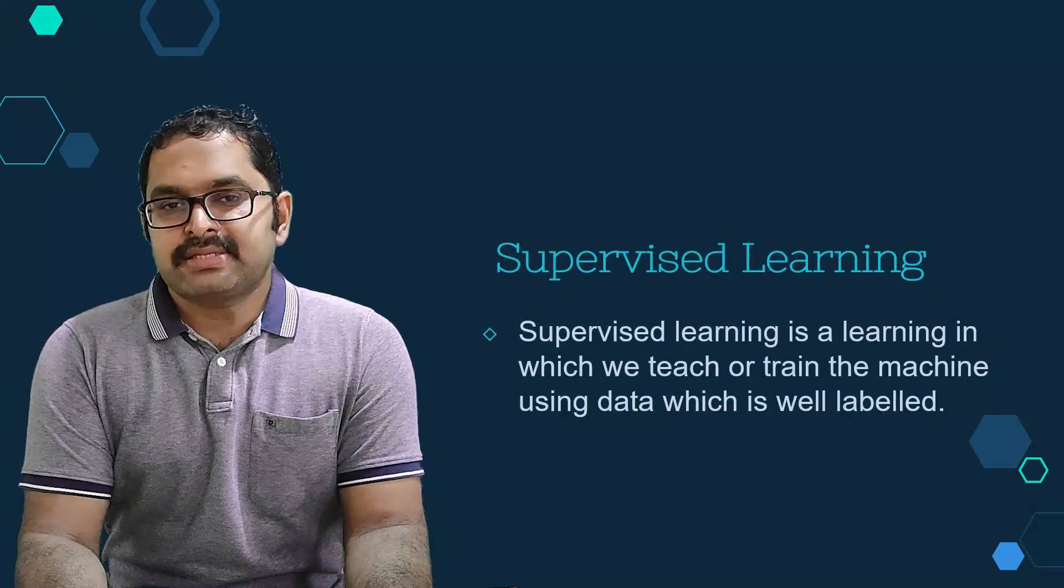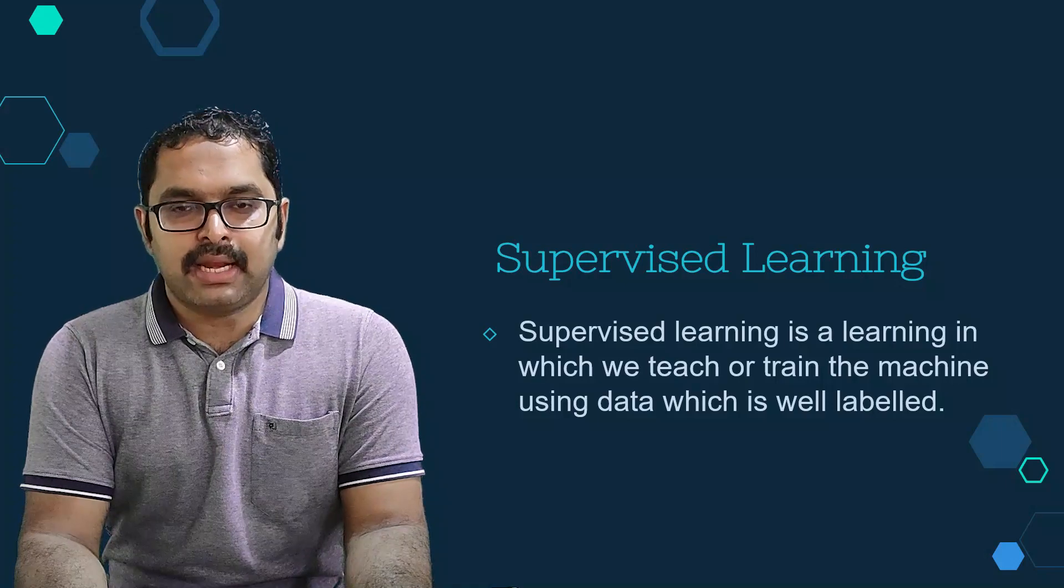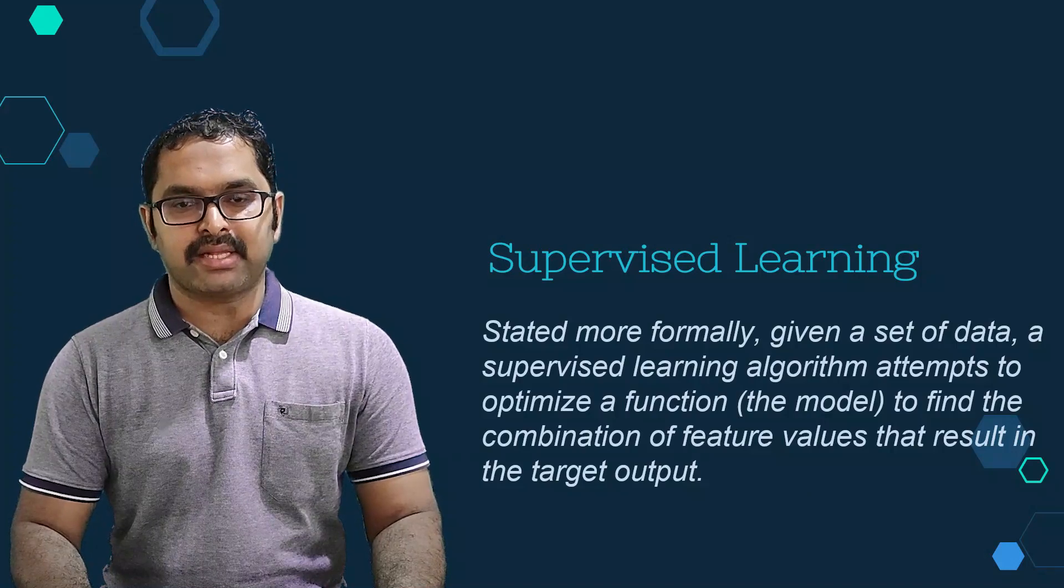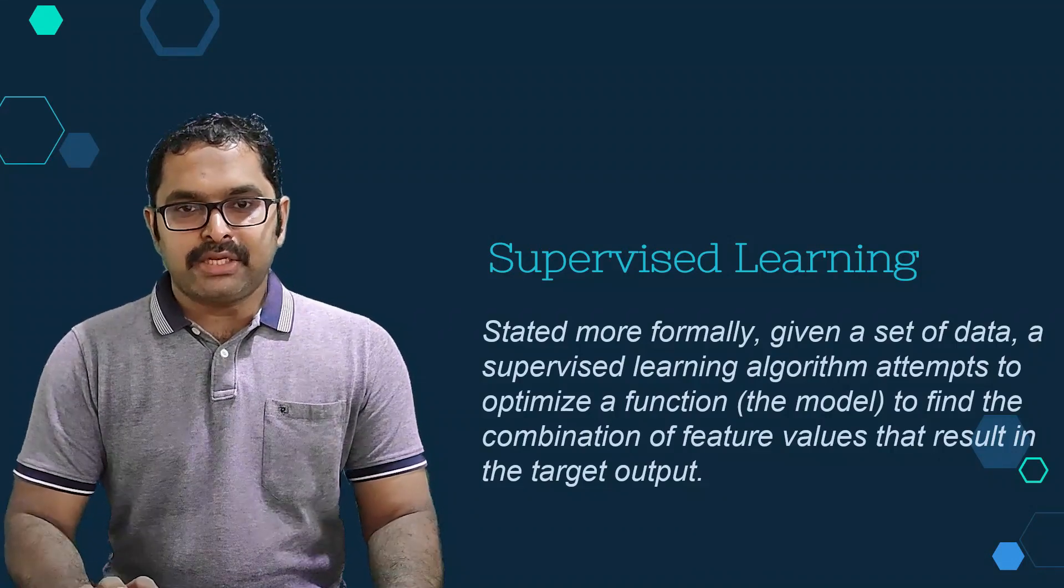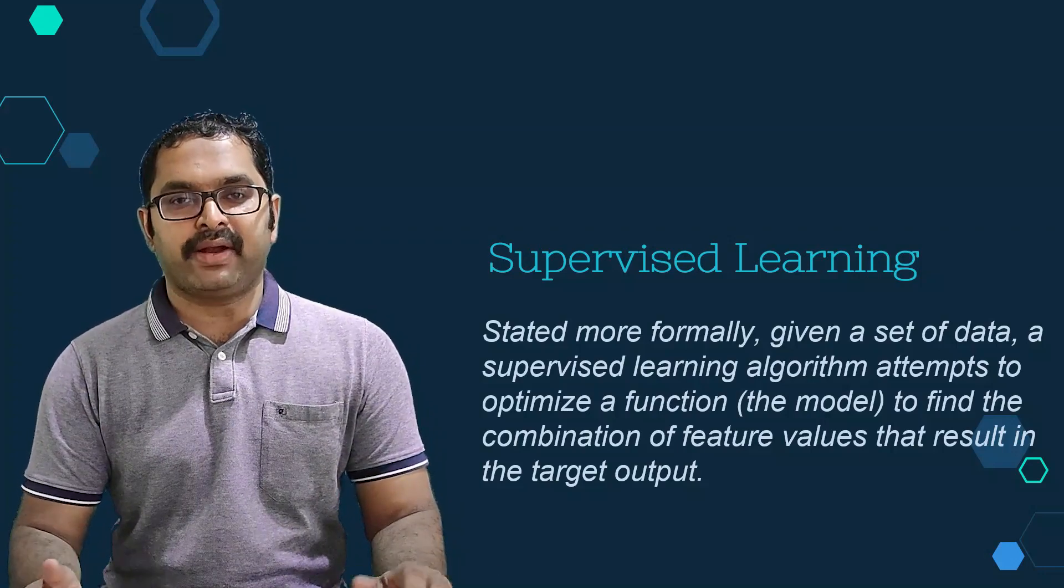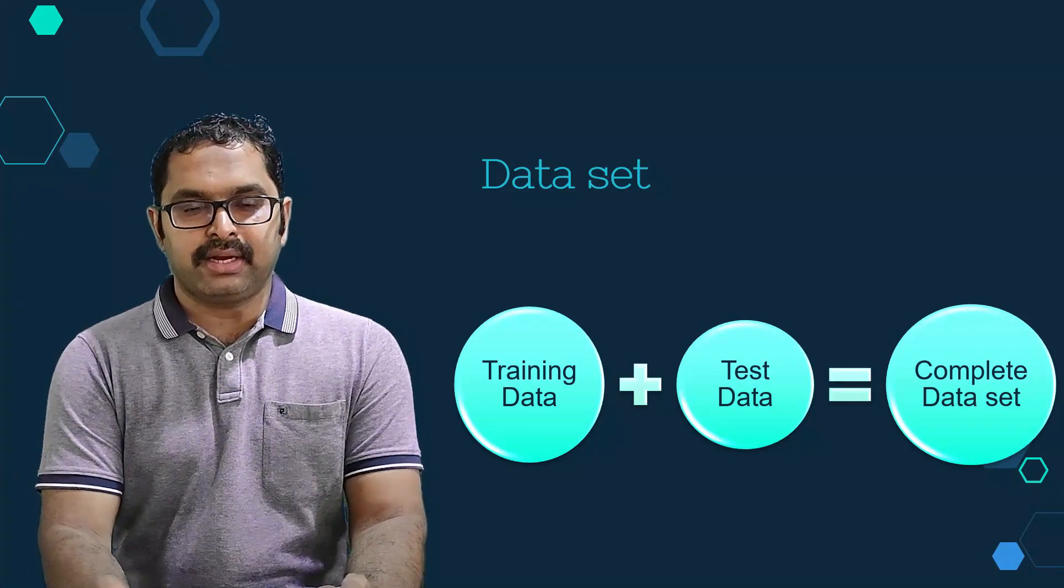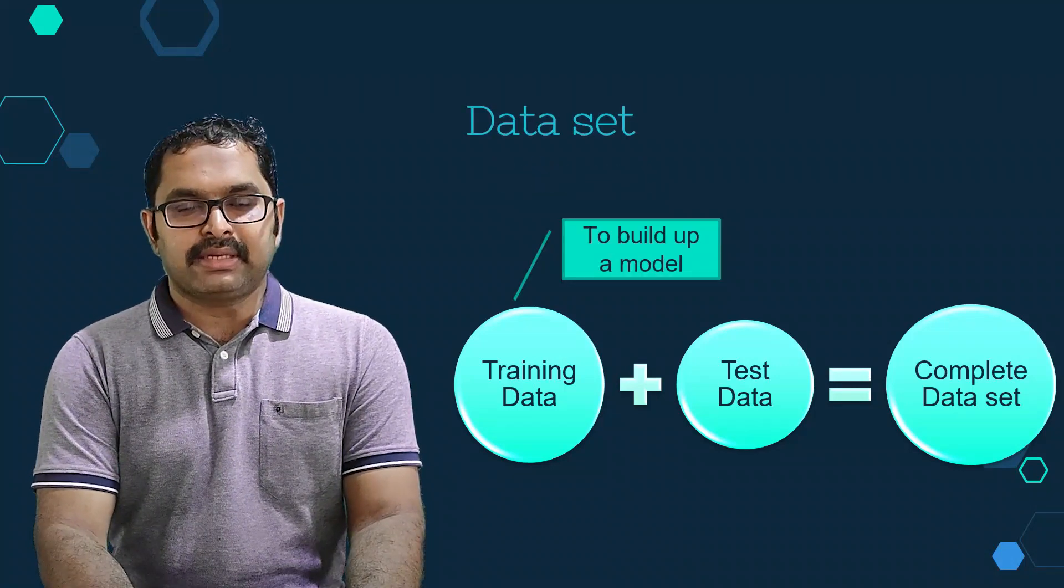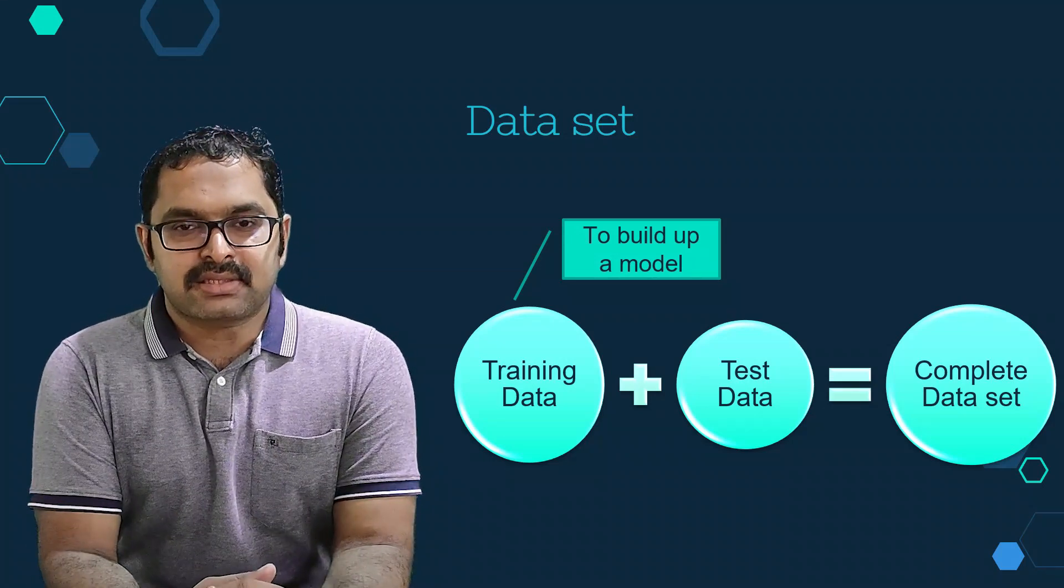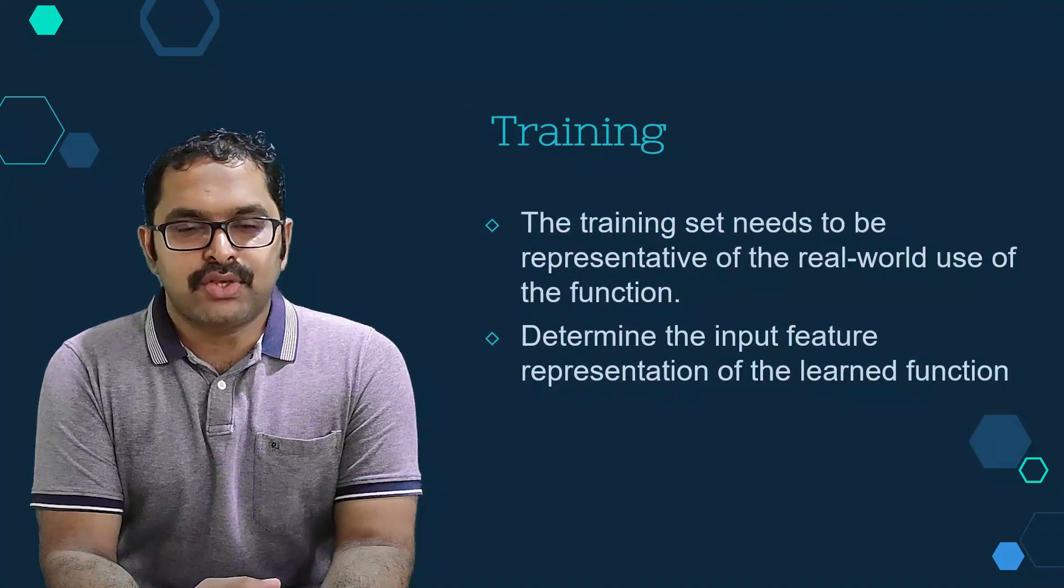Supervised learning is learning in which we teach or train the system using data which is labeled, meaning some data is already tagged with the correct answer. Here, supervised learning models try to identify relationships among different variables of the provided data. In order to teach the system, we divide the entire dataset into training data and test data, where the training dataset is used to train our system, whereas the test dataset acts as new data for predicting the results or to see the accuracy of our model.